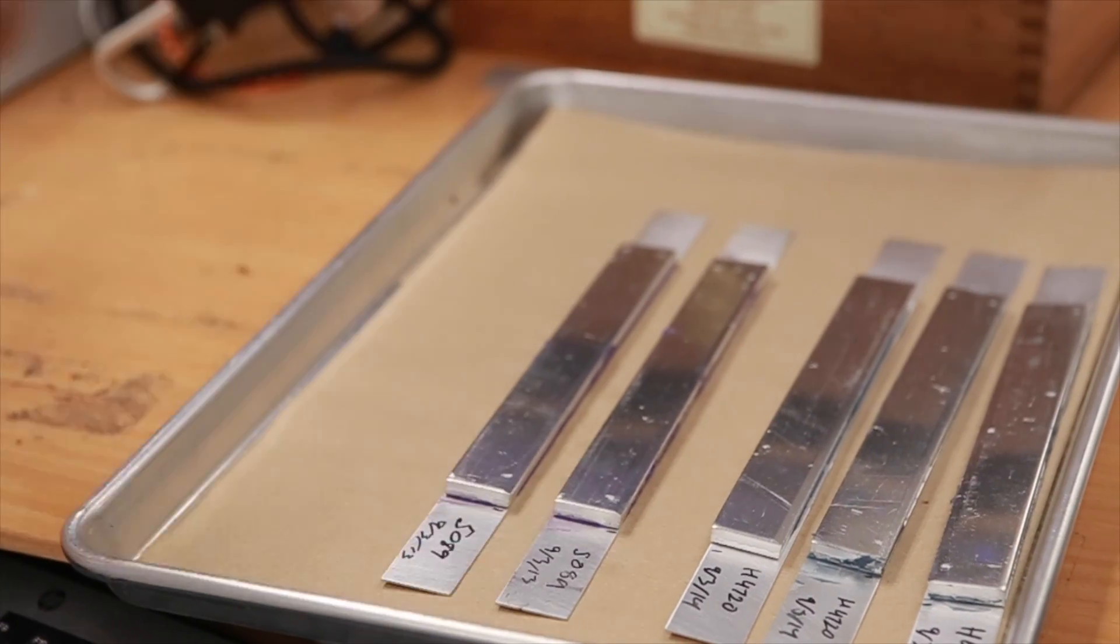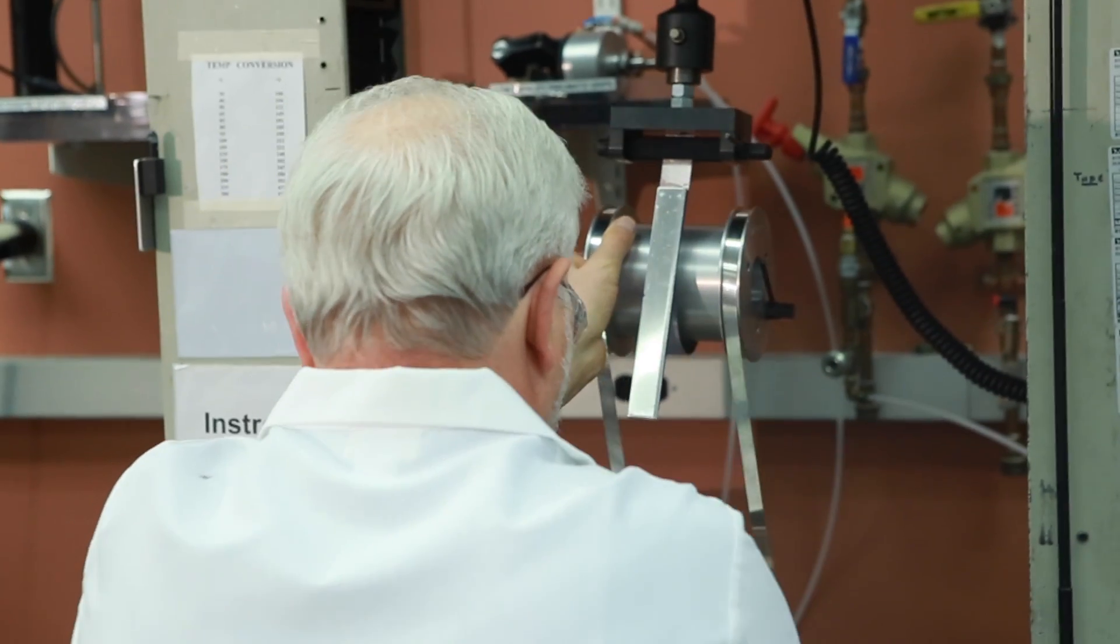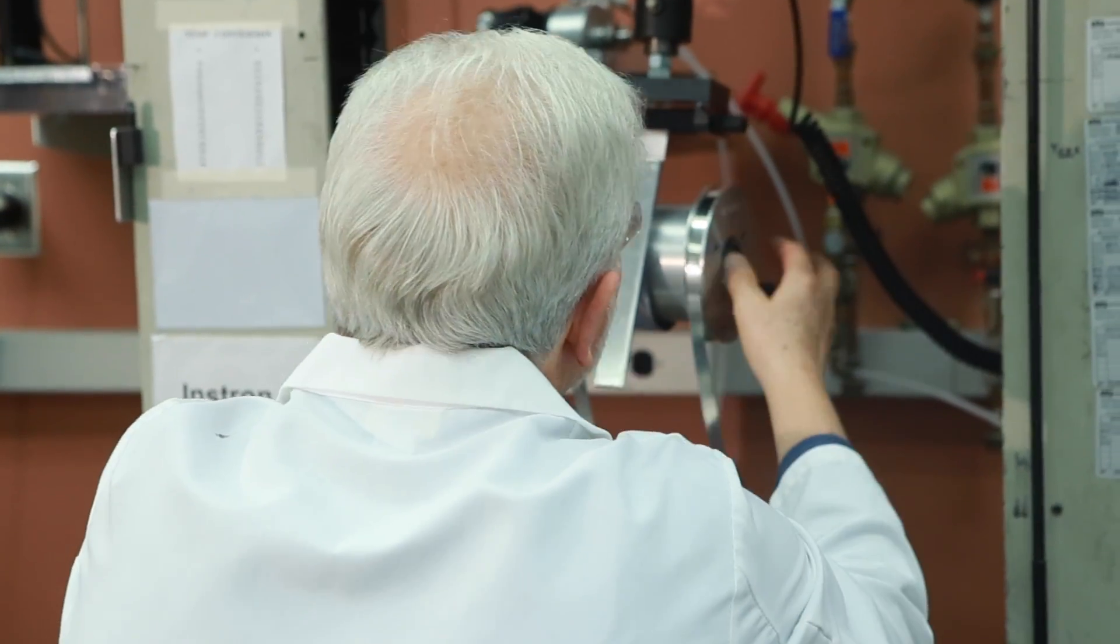Next we are going to test peel strength. Peel tests measure the average force required to fracture the adhesive bond between flexible materials when pulled at a specified angle. These tests are important for describing assemblies where the bond is subjected to peel loads.